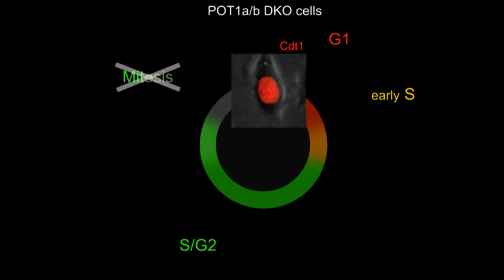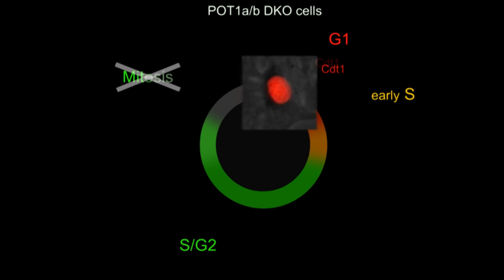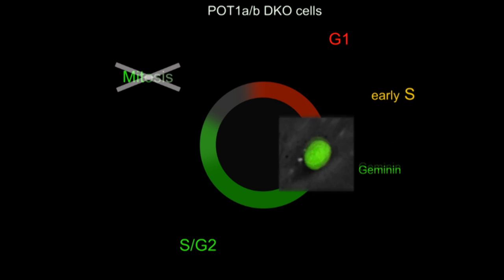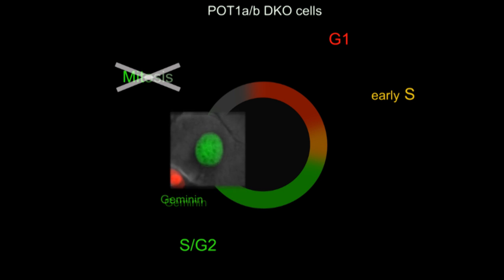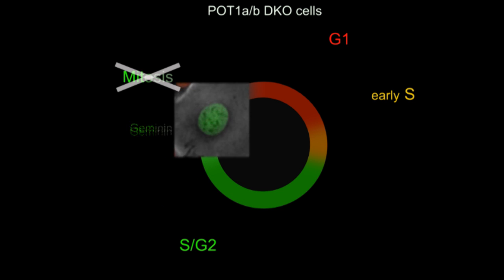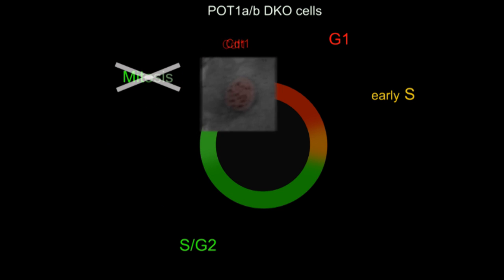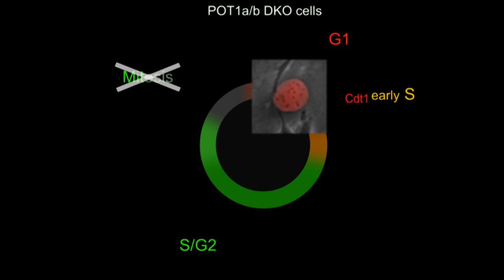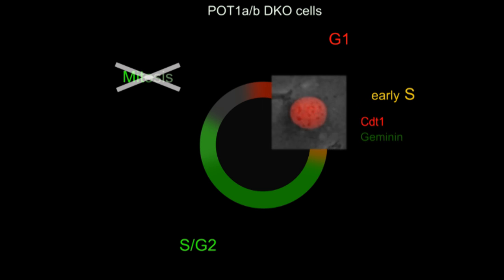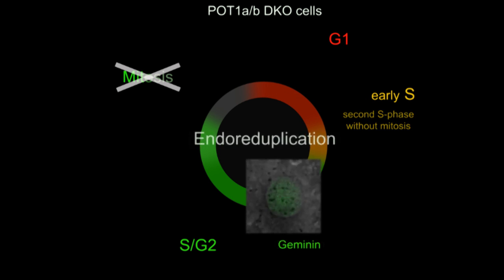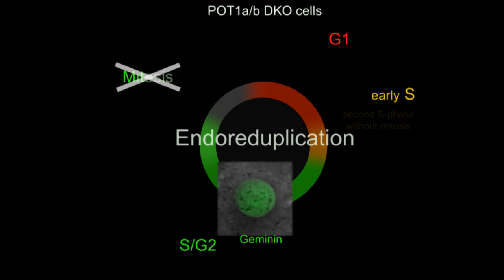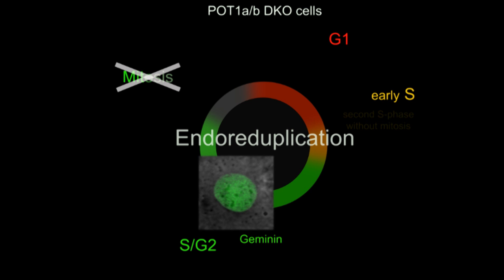The cells with telomere dysfunction made a mistake in the order of events. They start in G1 with the red CDT1, enter S phase and then make the green geminin. But after sitting in G2 for a long time, they managed to degrade geminin without going through mitosis. This resets the system, and the cells accumulate CDT1, which then allows a second S phase to occur even though the cells never went through mitosis.